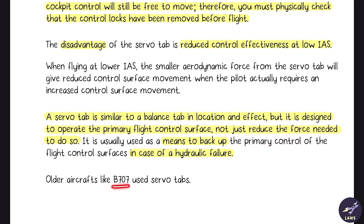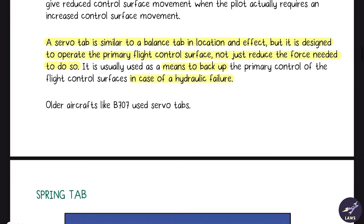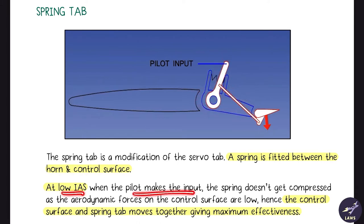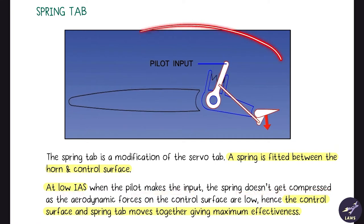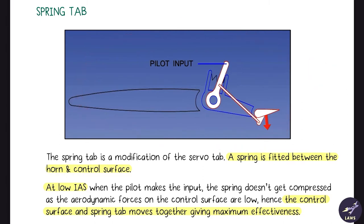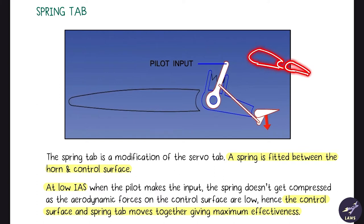In older aircraft like the Boeing 707, servo tabs were used. A modification to the servo tab is the spring tab, where a spring is fitted between the control horn and the control surface. At low IAS, when the pilot makes an input, the spring does not get compressed, as the aerodynamic forces on the control surface are low, and the control surface and the spring tab move together, giving maximum effectiveness.